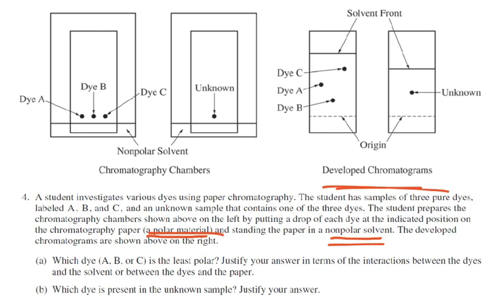Which dye — A, B, or C — is the least polar? If the paper is polar, polar things are going to stick to that paper, and non-polar things are going to go with the solvent. So whoever moves a little bit, that's polar. The least polar is going to be dye C, the one that moves the furthest. Polar things stick to the polar paper, so the least polar — the non-polar — will go the farthest. The answer is C because it is the least likely to stick to the paper and the most likely to dissolve in the non-polar solvent.